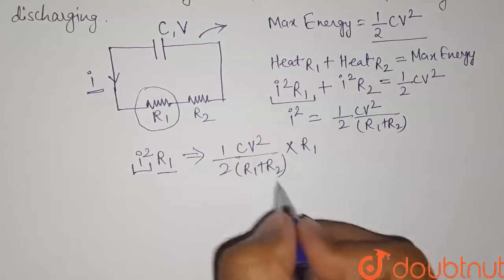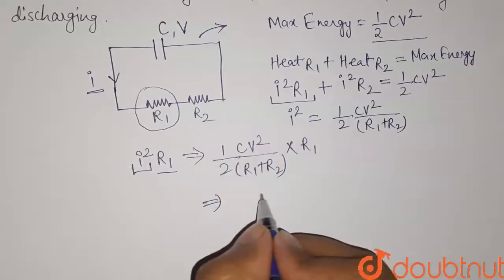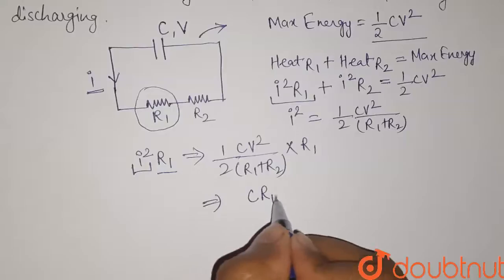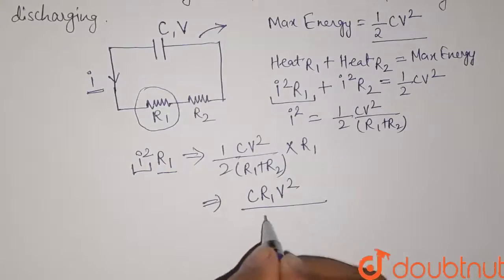So this is the heat generated in the resistor R1. Let me write it in simpler way. So it will be CR1 into V square divided by 2 R1 plus R2.